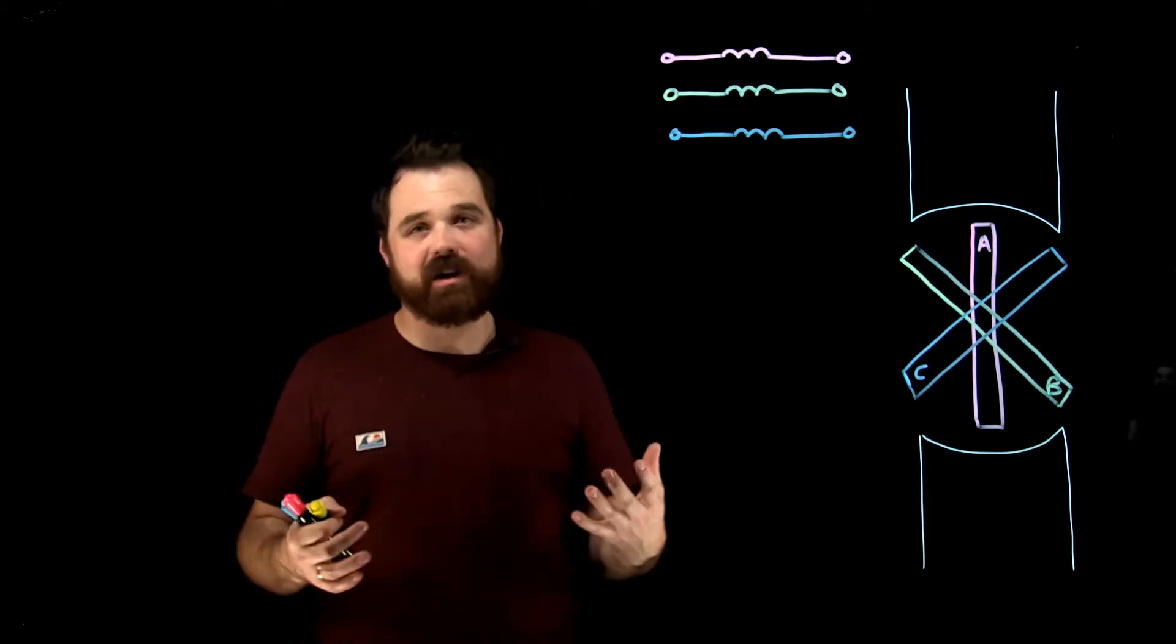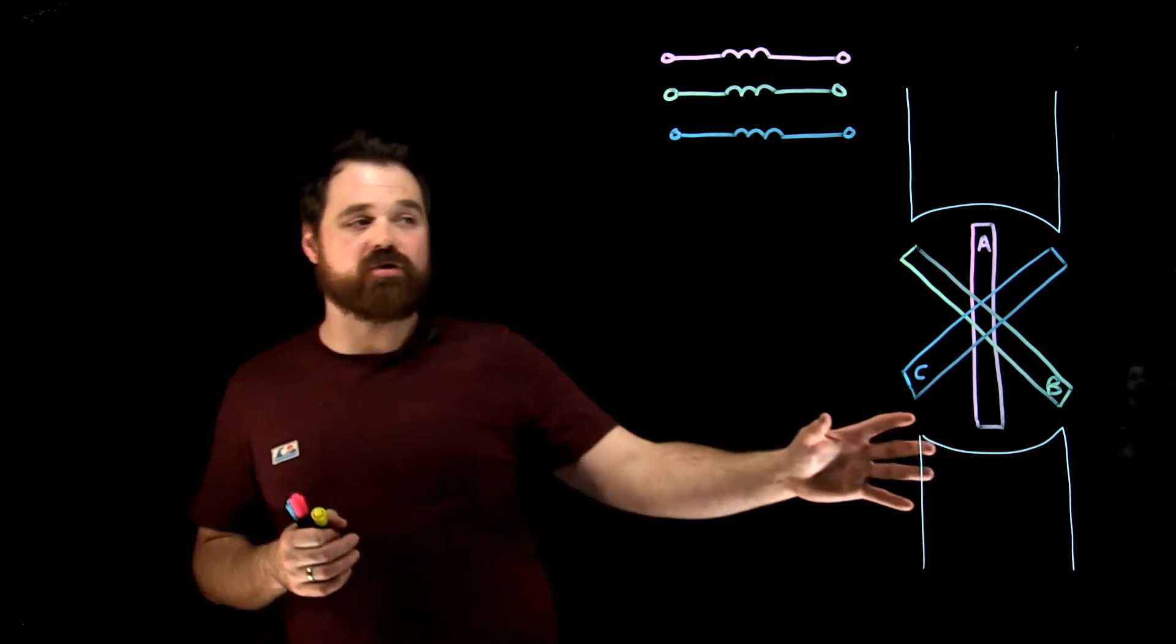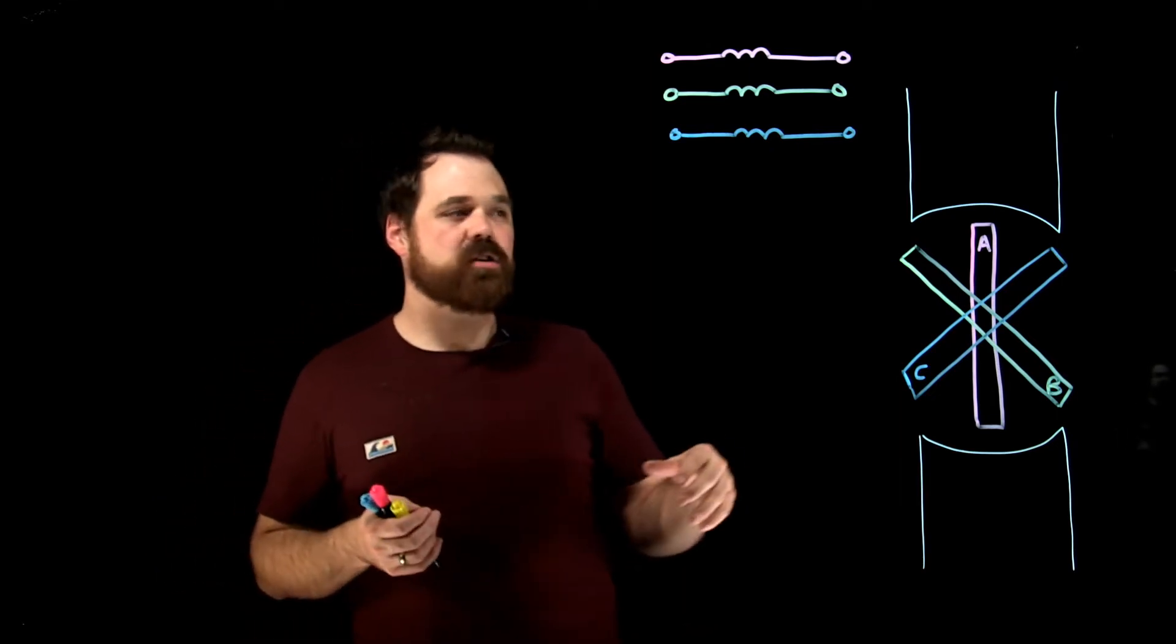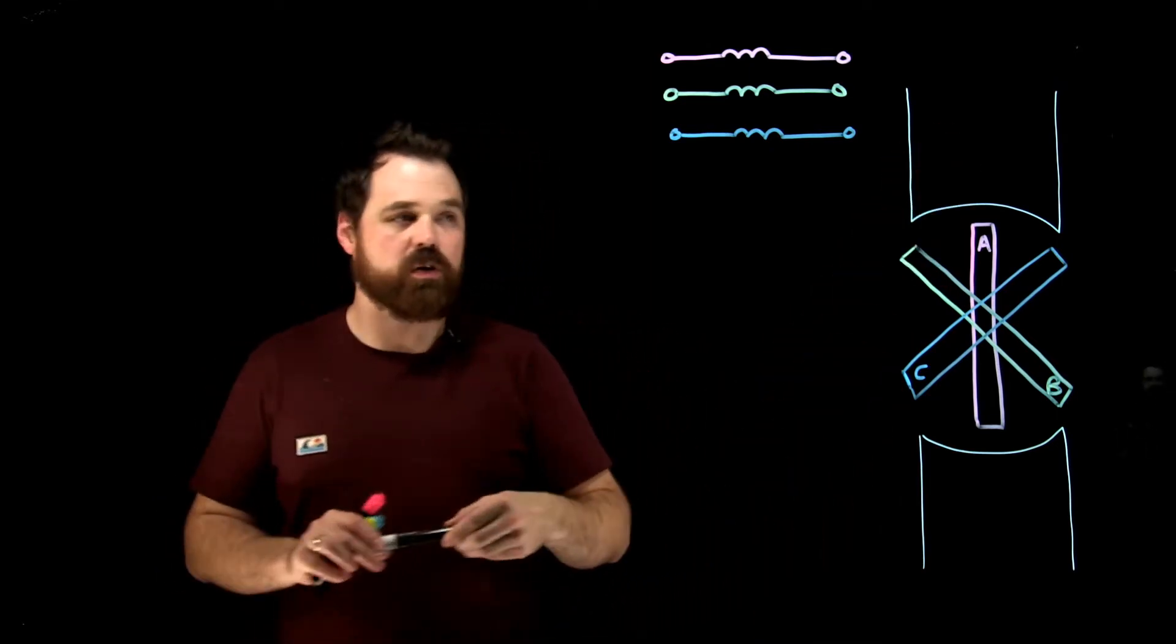So we're talking about a three-phase generator, like the one I've drawn over here. Just a couple of basics: a three-phase generator. What we see there is our two magnetic poles, our north and our south.